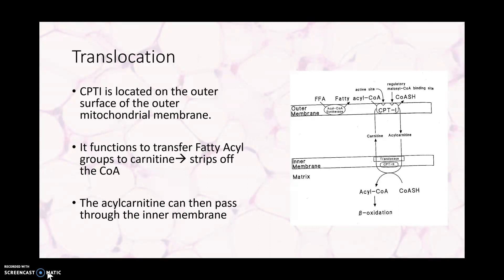CPT1 strips off the CoA from the fatty acyl-CoA. Once we strip this CoA off, we form acyl-carnitine, which can then pass through the inner mitochondrial membrane. This is an important step — CPT1 transfers the fatty acyl groups to carnitine by removing the CoA, and the resulting acyl-carnitine complex can now pass through the inner membrane.